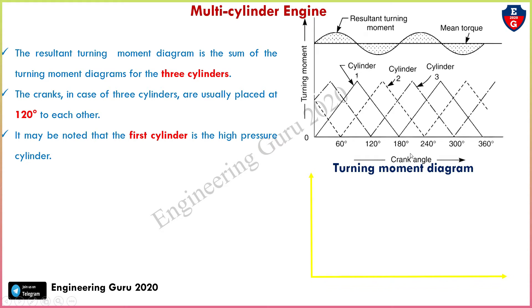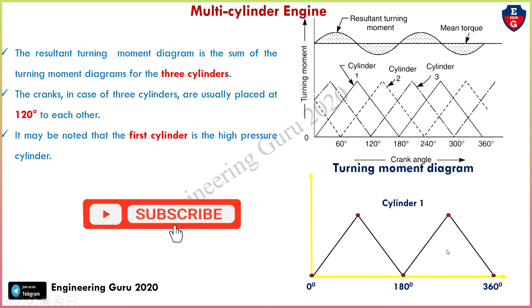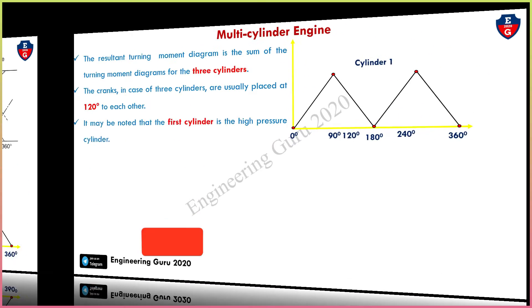On the x-axis is the crank angle and on the y-axis is the turning moment. The first cylinder is the high-pressure cylinder. If we see this, cylinder number one position starts from zero, then maximum, then minimum, then minimum, again maximum and minimum — this is the first cylinder crank angle position.